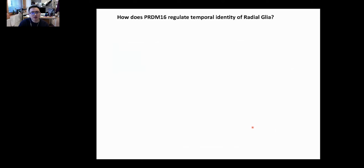The next question would be, how does PRDM16 regulate temporal identity of radial glia? Since it is a transcription factor, we performed ChIP-seq and identified more than 2000 peaks. Most of them are located in intergenic and intronic regions, suggesting that PRDM16 mainly binds to regulatory elements.